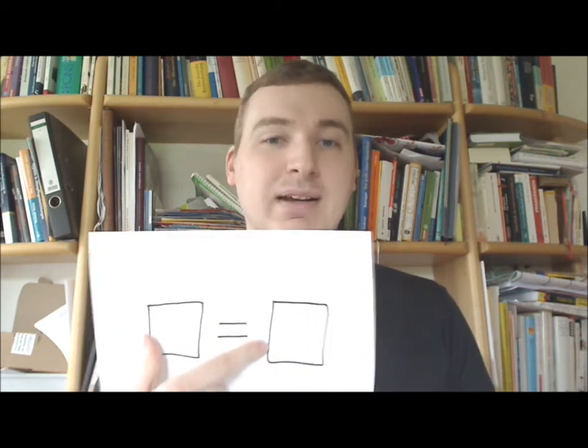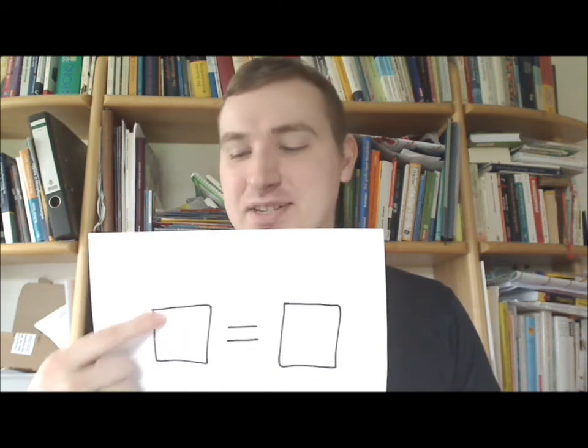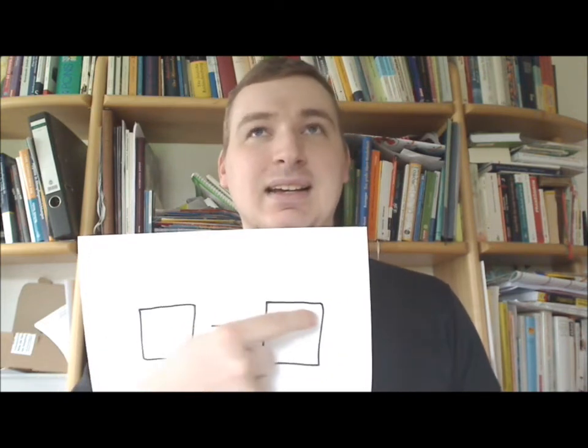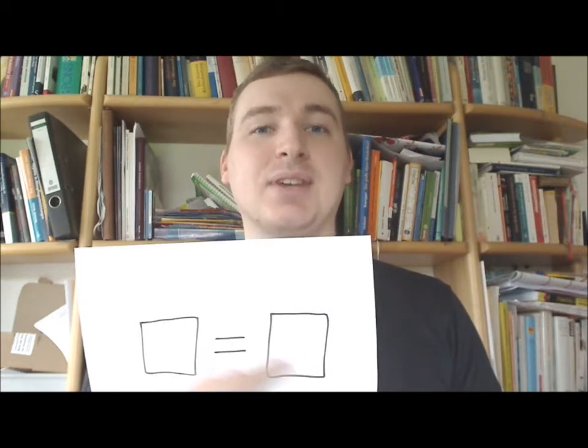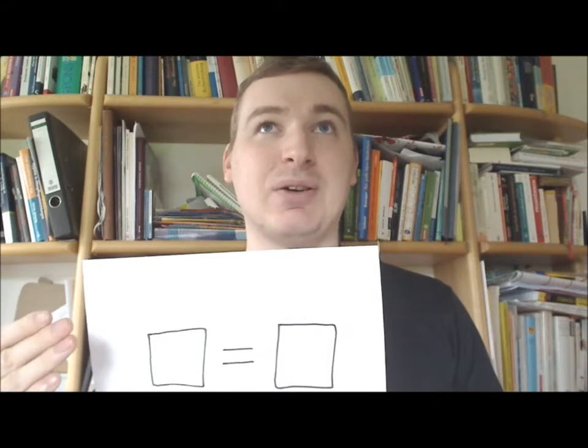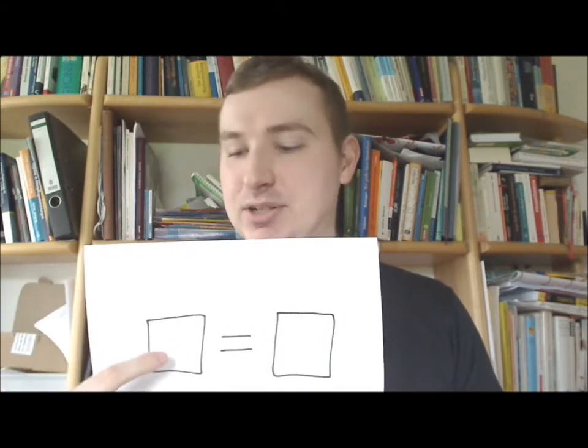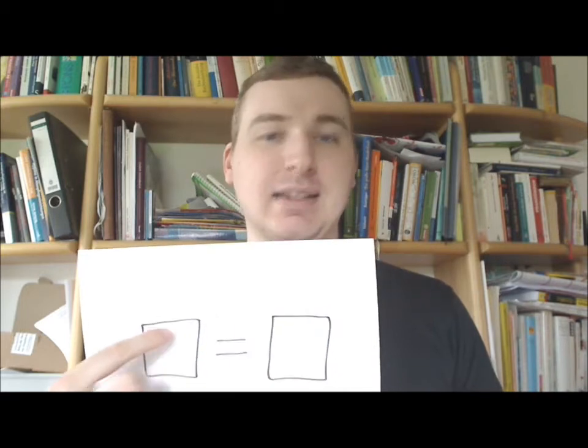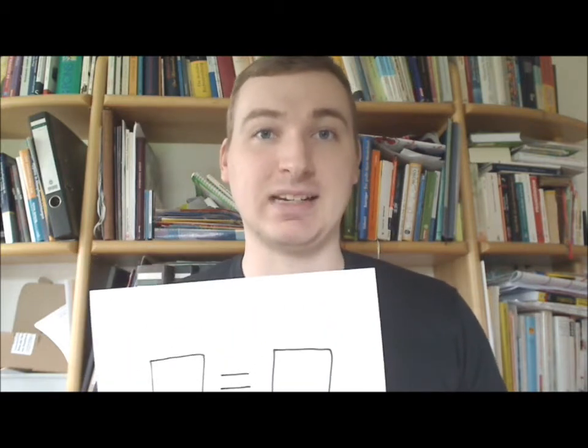You will find out about this after you started with this procedure, so you say one straight line is the same as the second straight line, that's your assumption, and then you calculate. That's the principle, and I will show you in a second with an example how it works.